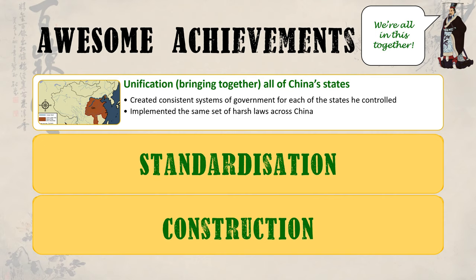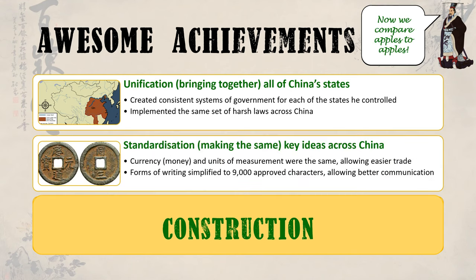Secondly, he implemented standardisation — the process of making things the same — in lots of areas, including currency and writing. Qin implemented new coins called Banliang, which could be used across all of China. He standardized measurements and weights by having consistent scoops and cups made to use all across the land. He even standardized the width of axles on chariots to make it easier for people to travel across different parts of China. China's writing system was also standardized, making it a rule that only certain characters could be used.